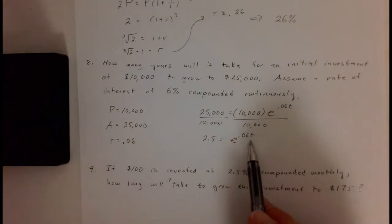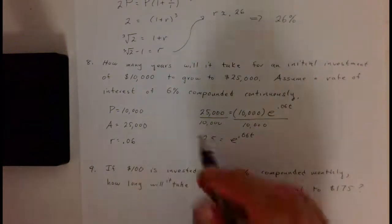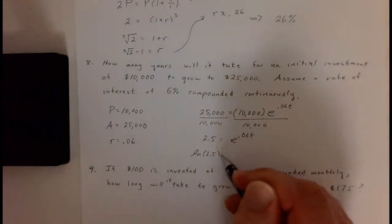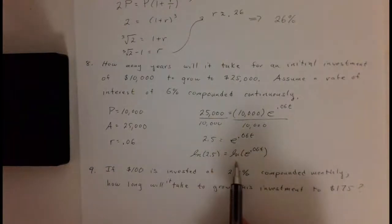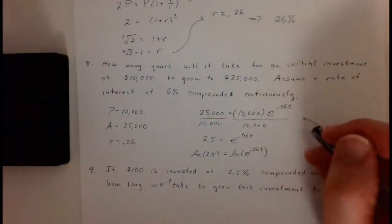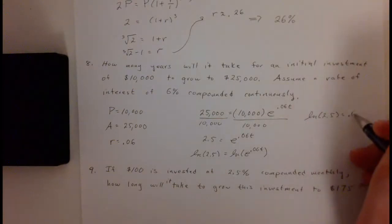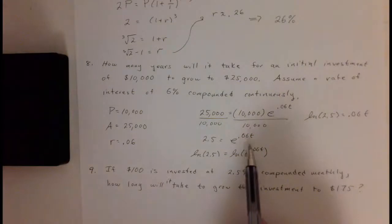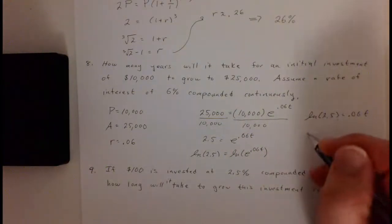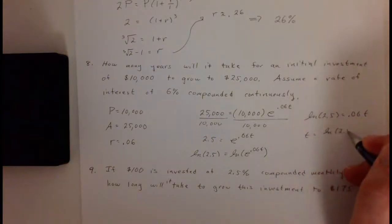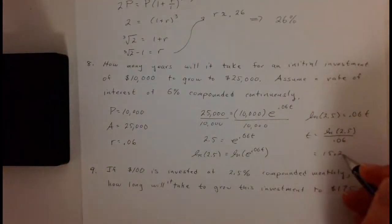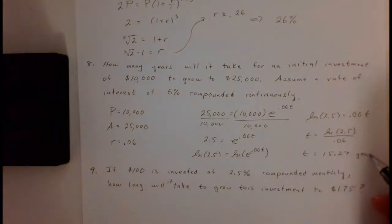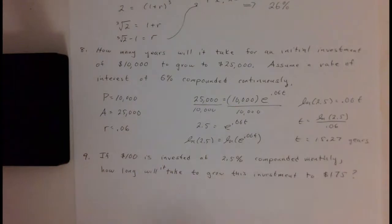To solve this, we take the natural log of both sides — we use the natural log because of the e. The e and natural log cancel, leaving point zero six T, so we get the natural log of two point five equals point zero six T. You could go directly from there and divide both sides by point zero six. Plugging into your calculator, this turns out to be approximately fifteen point two seven years.